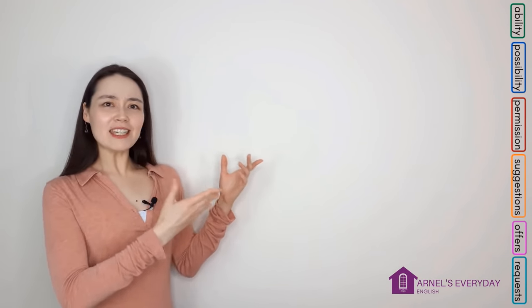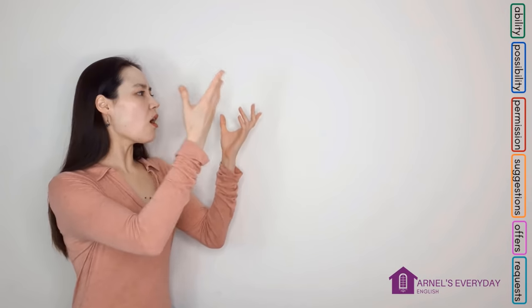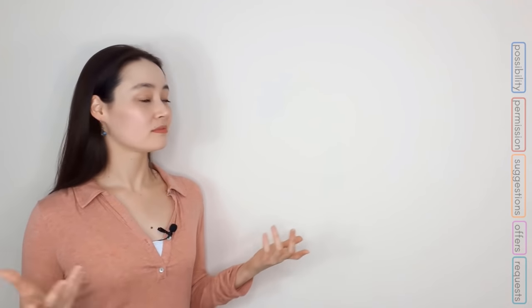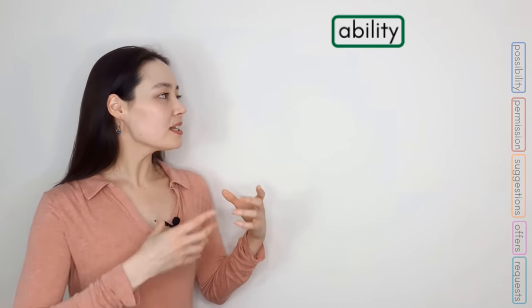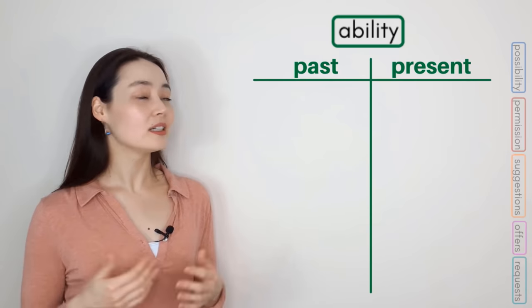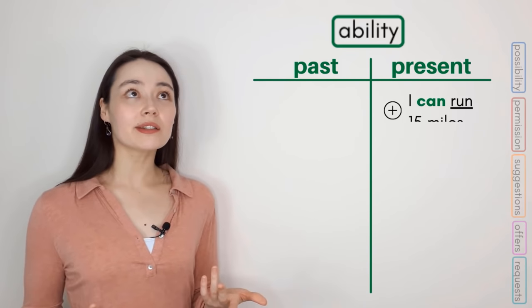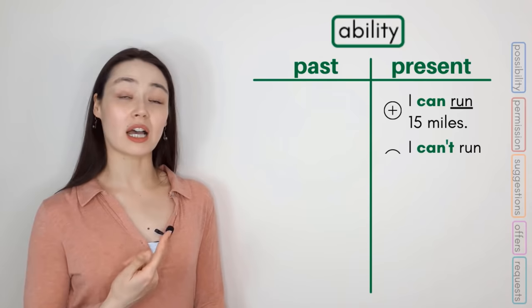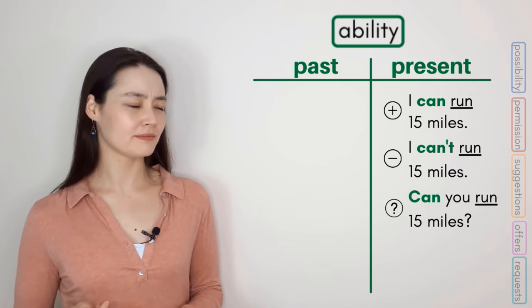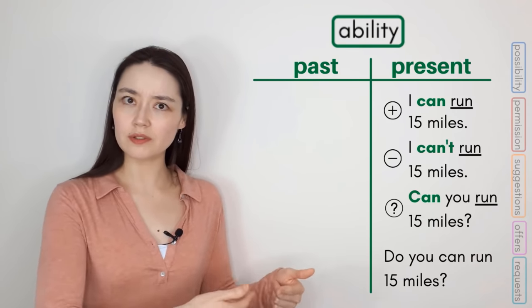Let's move on to the uses. Ability refers to our skills and talents. For the present: 'I can run 15 miles,' 'I can't run 15 miles,' 'Can you run 15 miles?' Note we don't say 'Do you can run 15 miles?' — that's incorrect.